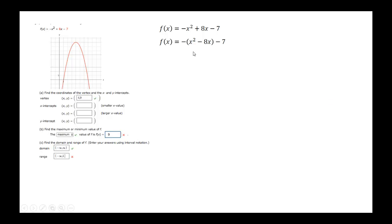We will begin by factoring a negative from the first two terms. Then, find half of negative 8 and square it. That would be negative 4 squared, which would give us 16. We'll add it inside the parentheses.